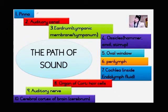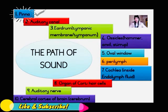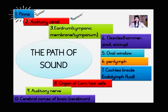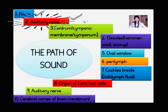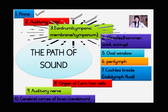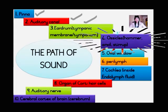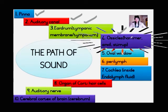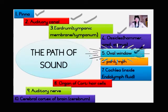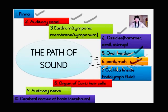Let's recap the path of sound. The sound waves are collected by the pinna, then passed down to the auditory canal. The vibrations then reach the eardrum. The eardrum starts to vibrate and the vibrations are transmitted to the three ossicles — the hammer, the anvil, and the stirrup. The stirrup passes the vibration through to the oval window. The oval window vibrates, causing wave movements in the perilymph.